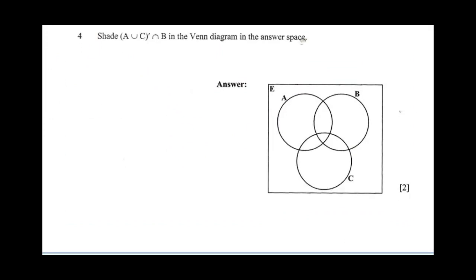Question 4 says, shade (A ∪ C)' ∩ B. Now first of all, let's draw our Venn diagram for A union C. This is 1, this is 2, this is 3. So let's call here A, let's call here B, and let's call here C.